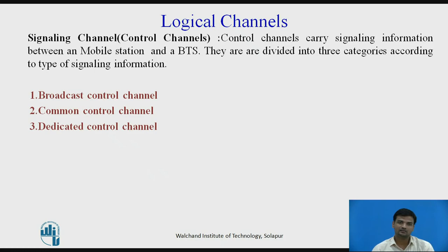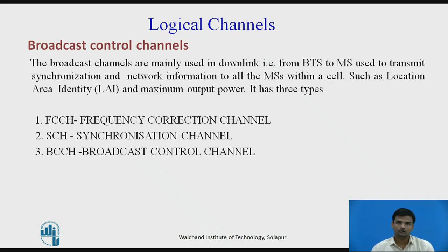Control channels or signaling channels carry signaling information between an MS and BTS. There are several forms of control channels in GSM, generally divided into three categories: broadcast control channel, common control channel, and dedicated control channel. Broadcast control channels are transmitted in the downlink direction only — transmitted by the base station only. They are used to broadcast synchronization and general network information to all MS within a cell, such as location, area identity, and maximum output power.